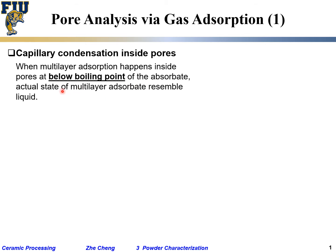The actual state of multi-layer adsorbate resembles a liquid. Monolayer we can imagine, but what exactly is multi-layer adsorption? If the temperature is below the boiling point, the multi-layer coverage on the surface behaves as if it's a liquid. Below 100°C, multi-layer water molecules packed closely together — that's just like liquid water.